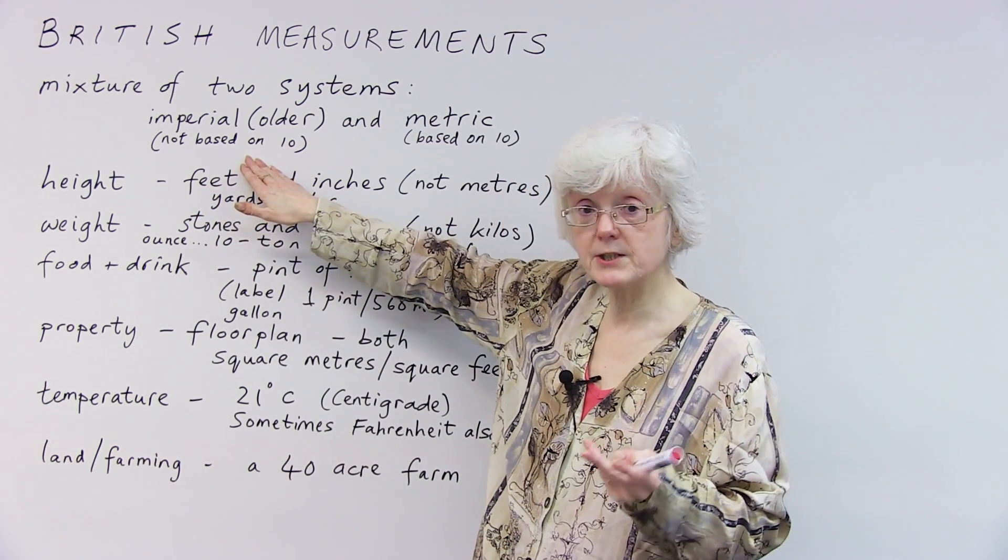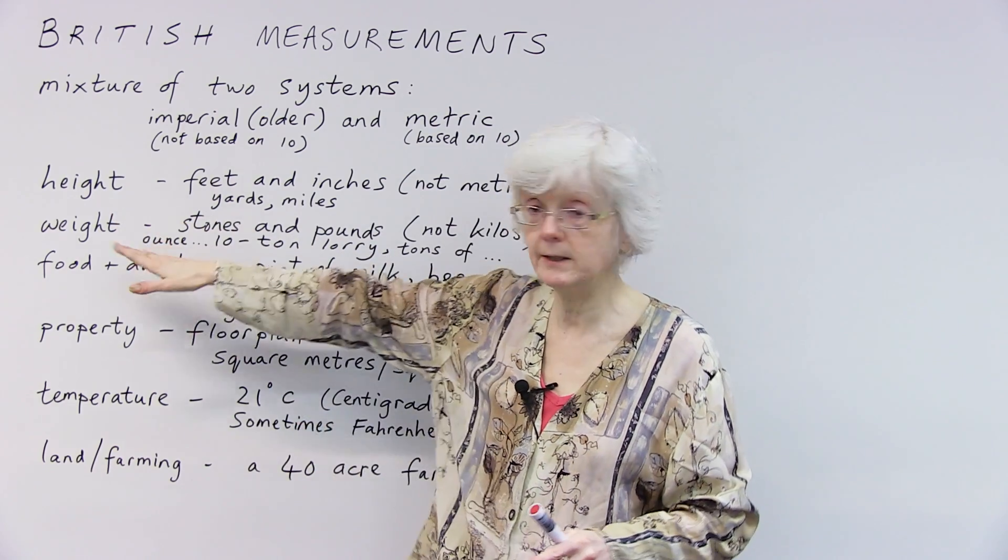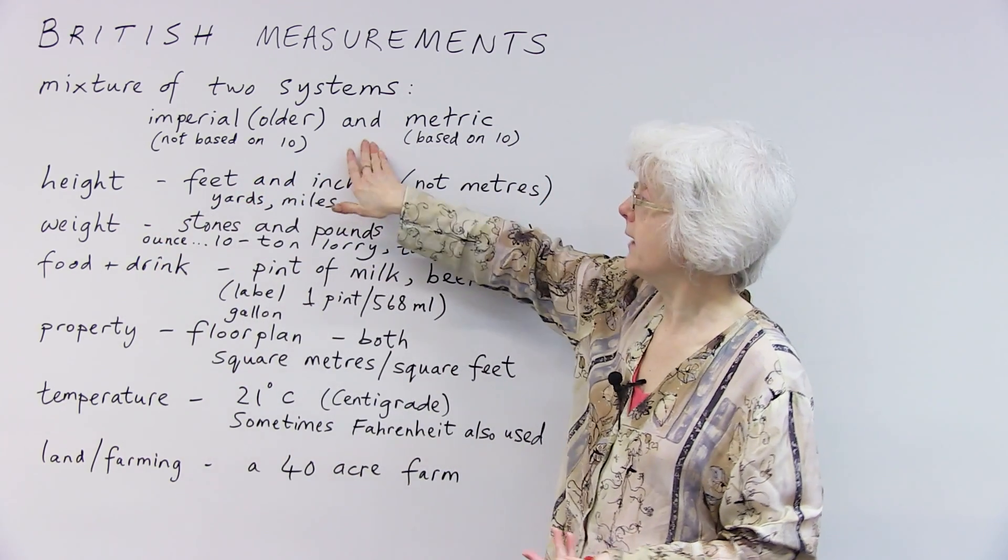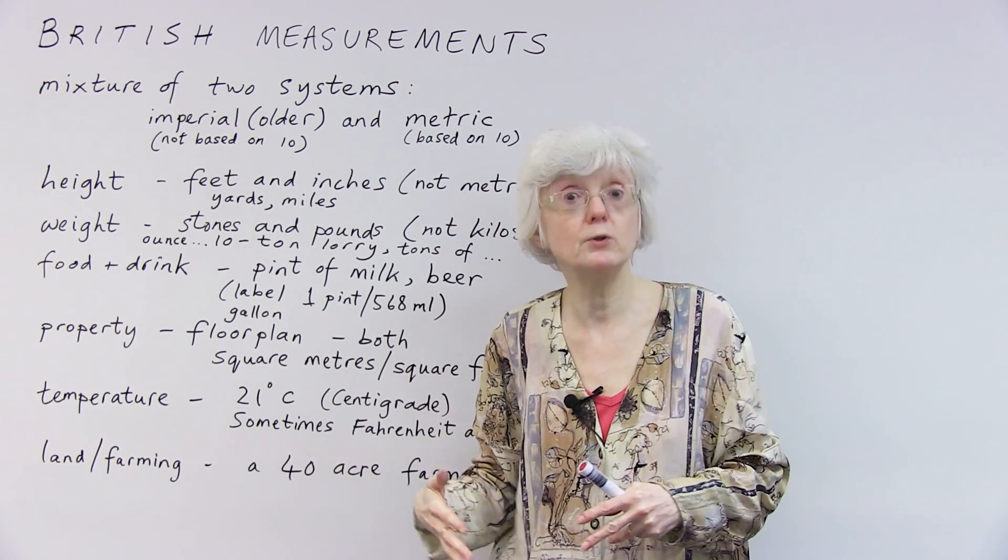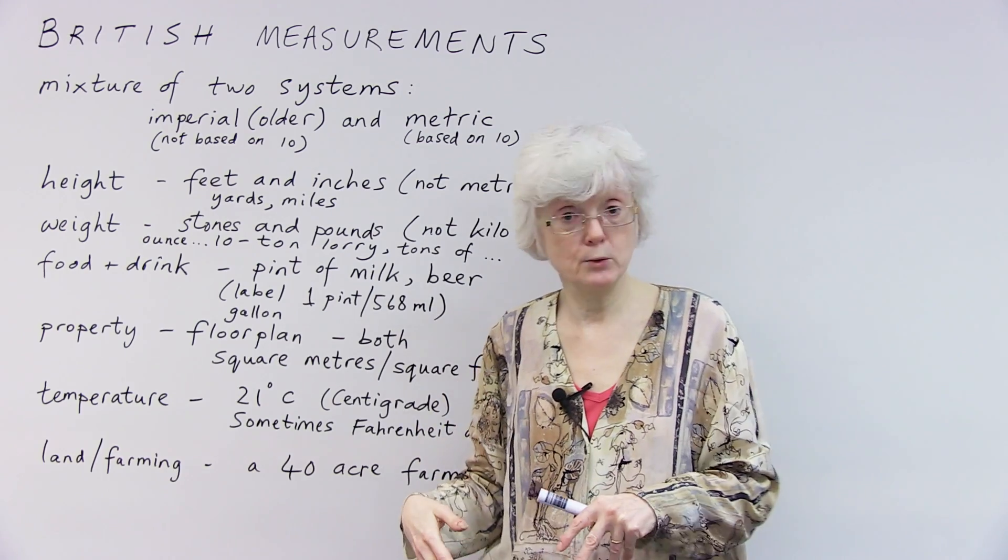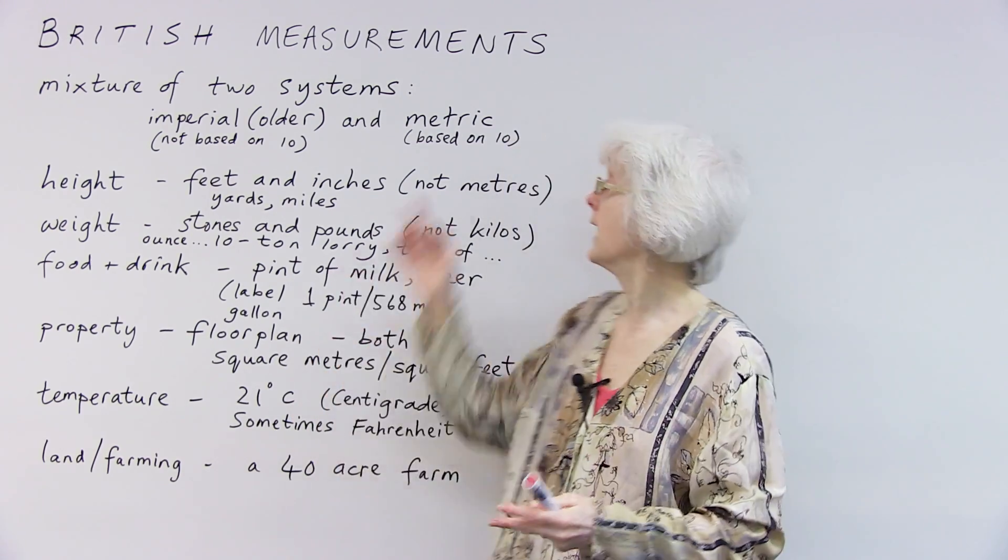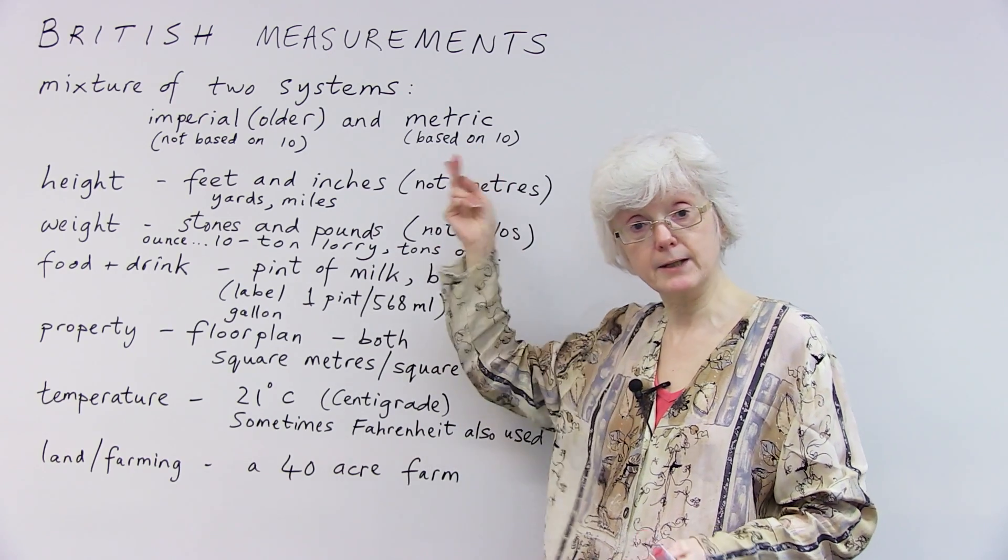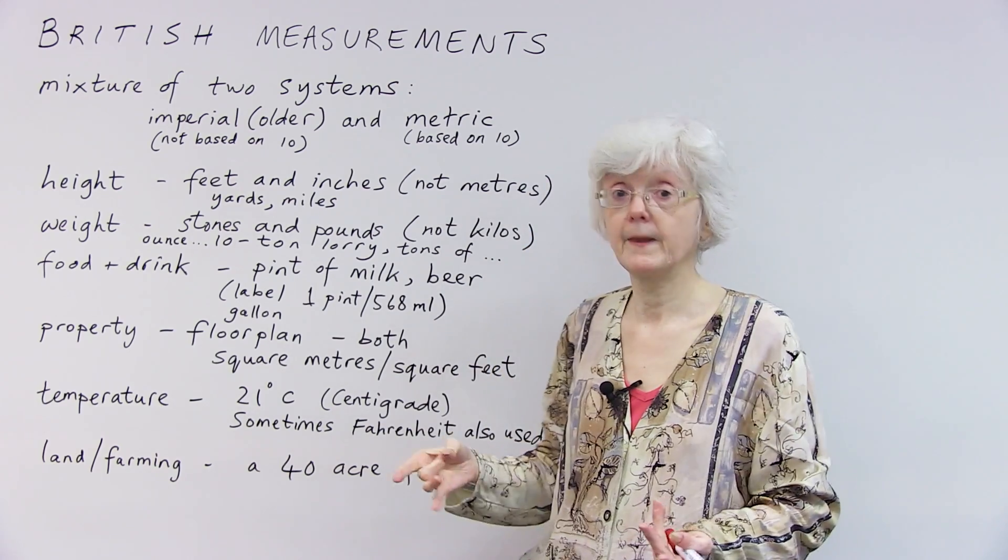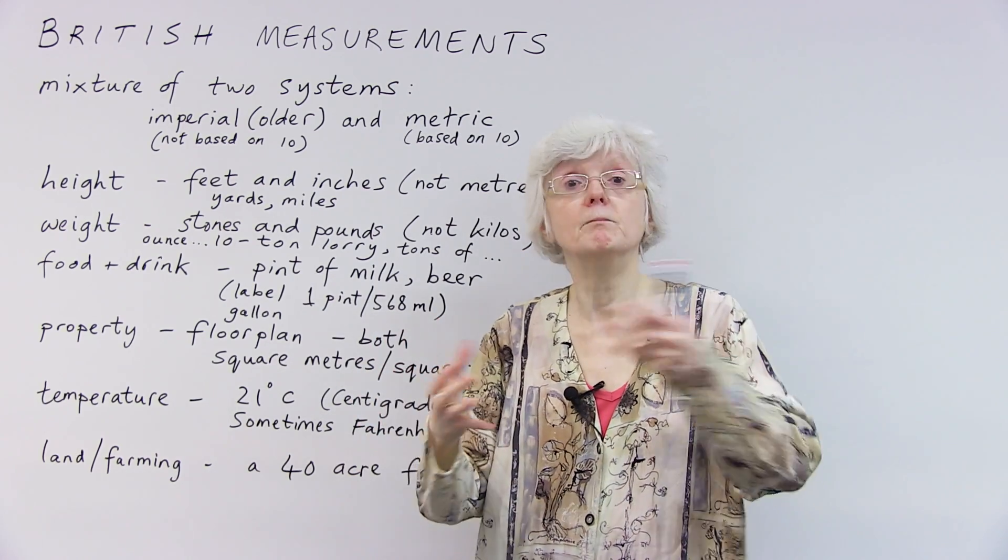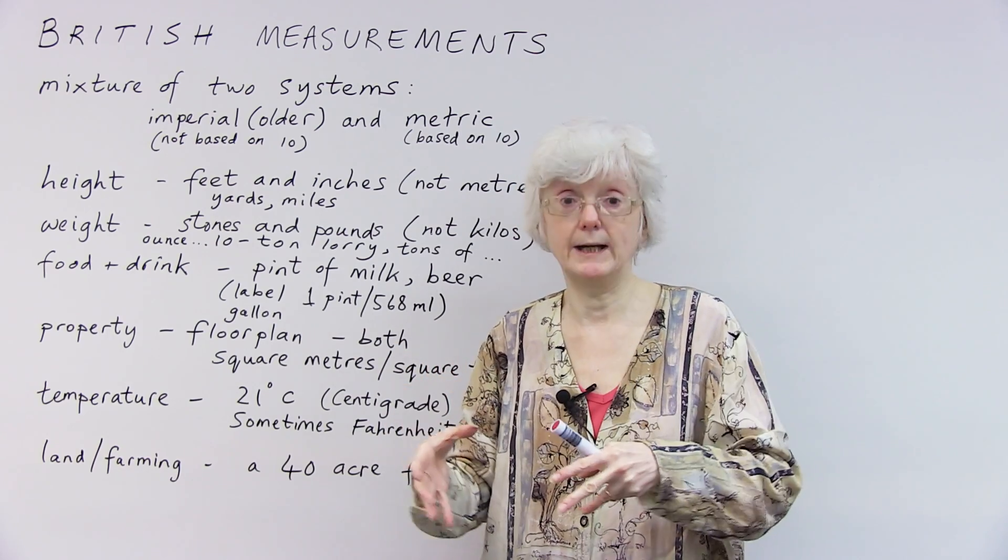So, the imperial system, all sorts of strange numbers for different things, for height, weight, etc. And then, though, when we joined the European community, the European Union, as it's now called, we became part of Europe. And because a lot of European countries, probably all of them, were using the metric system, we had to take on that system as well.